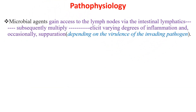When we look at the pathophysiology, microbial agents gain access to the lymph nodes via the intestinal lymphatics and subsequent lymph and cephalad spread. They then elicit a varied degree of inflammation and occasionally suppuration. This depends on the virulence of the invading pathogen.